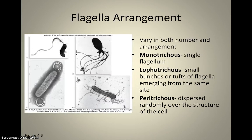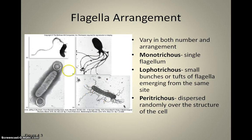There are several different flagellar arrangements. A monotrichous flagella is when there is just one single flagella. Lophotrichous is when you see small bunches or tufts in one area. Peritrichous is when flagella are dispersed randomly over the surface. Just remember these three terms and these three flagellar arrangements.